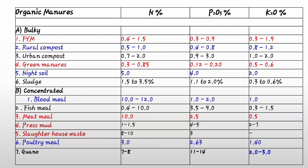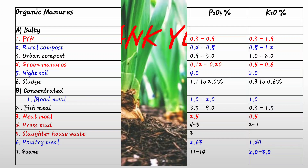Regarding organic manures: bulky organic manures — FYM contains approximately 0.4 to 0.5% nitrogen, 0.2 to 0.3% phosphorus, and 0.3 to 0.5% K₂O. Leguminous green manures contain 0.3 to 0.85% nitrogen, 0.12 to 0.20% phosphorus, and 0.5 to 0.6% K₂O. In concentrated organic manures, meat meal contains 10% nitrogen, 2.5% phosphorus, and 0.5% potassium. Guano (seabird manure) contains 7 to 8% nitrogen, 11 to 14% phosphorus, and 2 to 3% potassium. This chart is important for objective purposes.